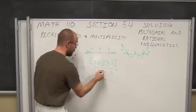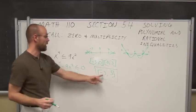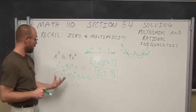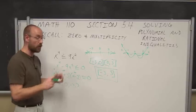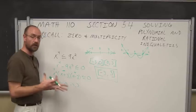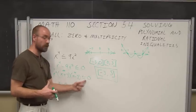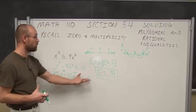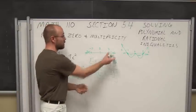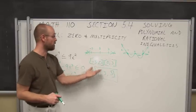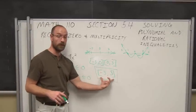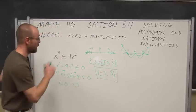So the solution is the interval from negative 3 to positive 3. Zero is included in there just as it was in the graph. Any value between negative 3 and 3 will make the inequality a true statement — less than or equal to 0. It includes the endpoints because it could equal 0, so this is a closed interval from negative 3 to 3.